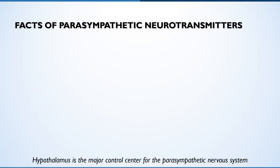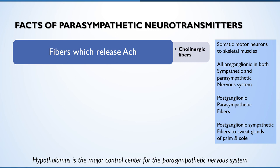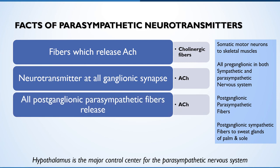Acetylcholine is the neurotransmitter at all autonomic ganglia synapses. The fibers which release acetylcholine are called cholinergic fibers. All somatic neurons which innervate skeletal muscles release acetylcholine. All preganglionic fibers in both sympathetic and parasympathetic nervous systems are also cholinergic in nature. Postganglionic parasympathetic fibers are also cholinergic in nature. Postganglionic sympathetic fibers to sweat glands of the palm and sole are cholinergic in nature.